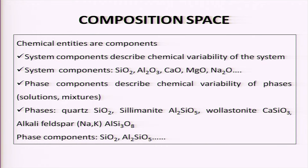For example, if it is Potash-Feldspar, whose formula is KAlSi₃O₈, it is made up of K₂O, Al₂O₃, and SiO₂. Similarly, quartz has the composition SiO₂ and is a one-component phase. Similarly, sillimanite, which is Al₂SiO₅, can be broken down into two components: Al₂O₃ and SiO₂. So there is an idea of phase components and system components.